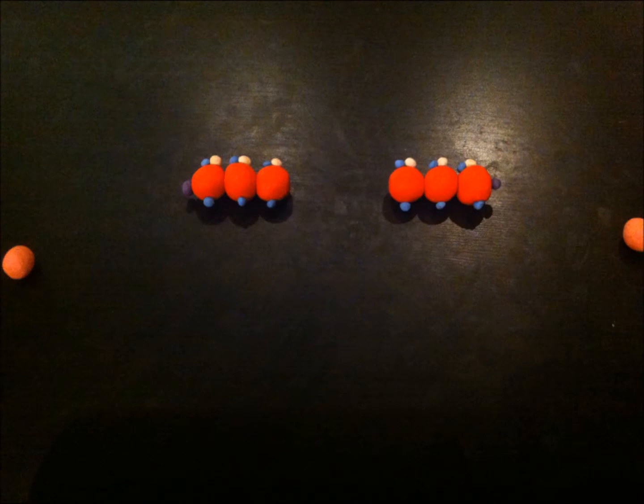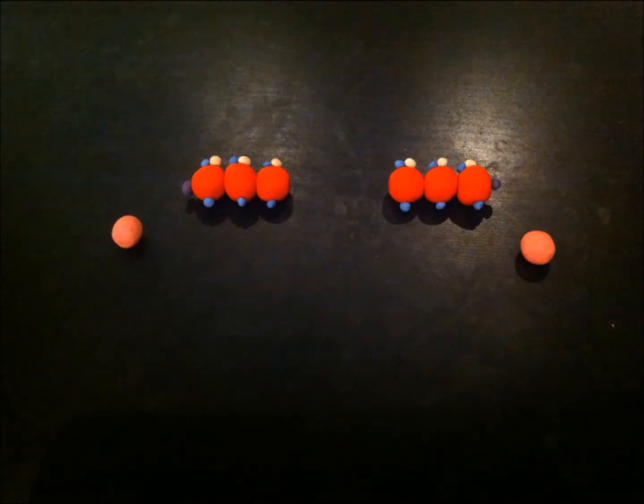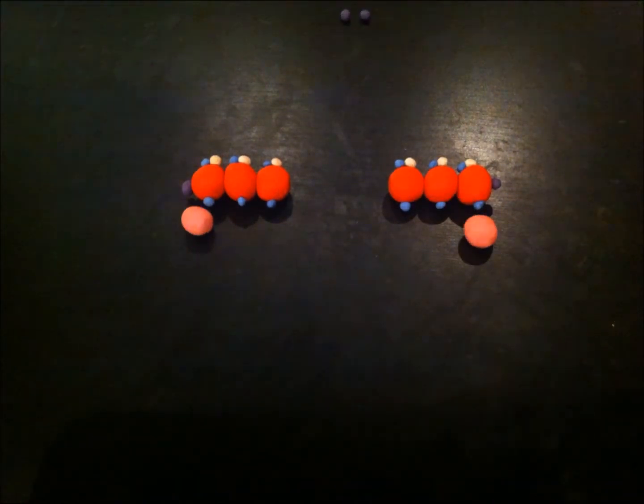Two ATP molecules enter and phosphorylate glucose and produce two ADP molecules. Glucose splits into two G3P molecules. Two NAD-positive molecules are reduced to form NADH and inorganic phosphate groups are added to glucose during this coupled reaction.